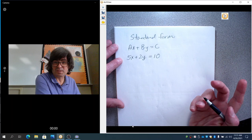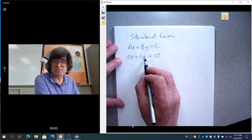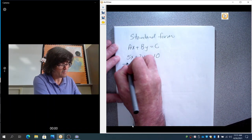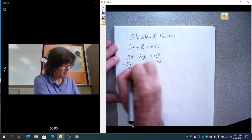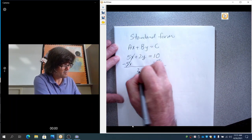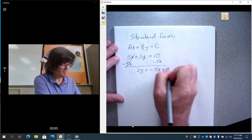So, there's two options. One is you can convert this to a slope-intercept form by solving this for y. So, I'm going to do that one first. That means we want to get y by itself. So, I'm going to start by taking away 5x.